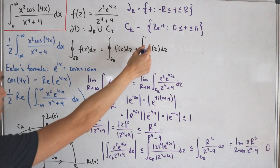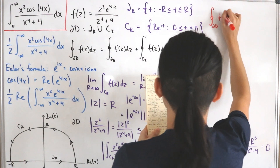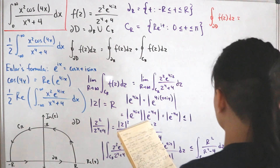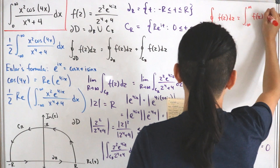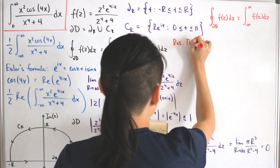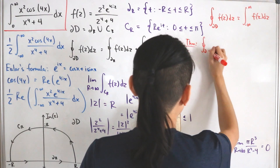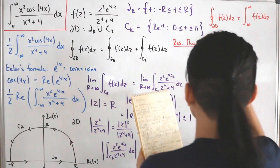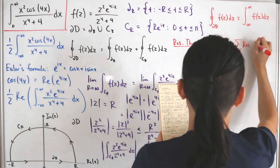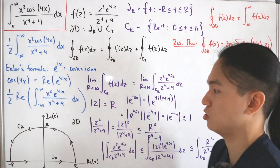Since the arc integral approaches zero, the contour integral over ∂D of f(z) dz equals just the real-line integral from negative infinity to positive infinity of f(z) dz. Now we apply the residue theorem: for a simple closed curve, the contour integral of f(z) over ∂D equals 2πi times the sum of residues at poles lying inside the contour.